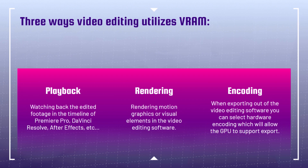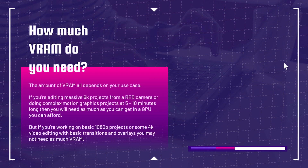Each of these processes will be sped up the more powerful GPU you have. The most common ones we saw up until recently include when Adobe pushed their update about hardware encoding, and DaVinci Resolve has been doing that for quite a while. Encoding is the newer feature in Adobe Premiere Pro that utilizes the GPU and specifically VRAM. The amount of VRAM all depends on your use case.